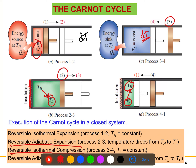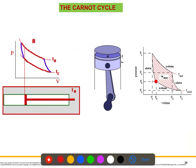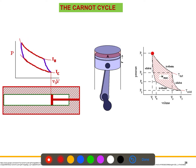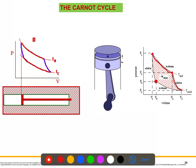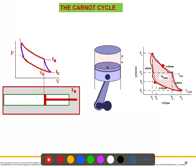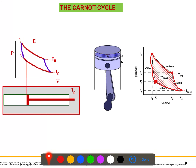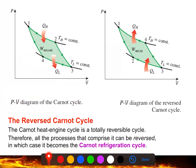So we have two adiabatic processes and two isothermal processes, completing the entire cycle. This is the complete Carnot cycle and the process continues this way. You can see in this animation: initially it was at state one, then two, three, and four, and then it goes back to the original position. Now let's quickly look at the PV diagram for the Carnot cycle. If we consider the reversed Carnot cycle, the direction is reversed — one, two, three, four going in the opposite direction.